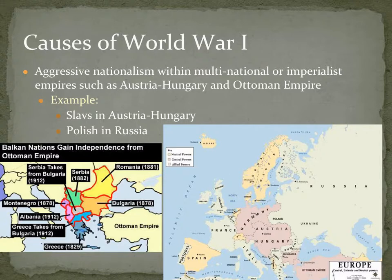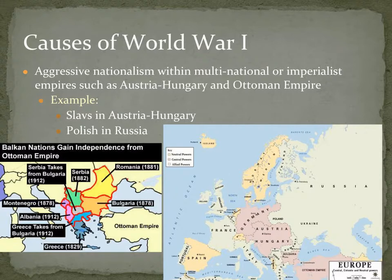The same thing would be true for the Poles in Russia. Poland had been divided up in the late 1700s among European countries, and the Poles are under the control of Russia but they're not Russian-speaking and don't have the same culture. They would like to have a nation for their own people as well. Nationalism and different ethnic minorities wanting their own country definitely contributed to the tension that led to World War I.